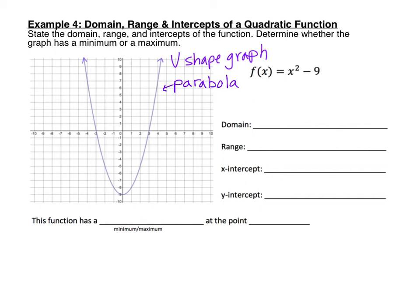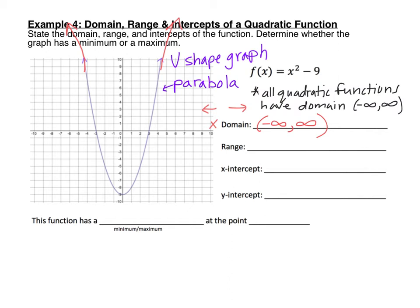We're going to study quadratic functions and parabolas in more detail later in this course. For now, I'll give you the picture of the graph, and you're going to find the domain and range. Remember that the domain is the x values of the function — I'm looking for the lowest x, what's furthest to the left, and the highest x, furthest to the right. Since this graph has arrows on the end, it goes up and to the left forever on one side and up and to the right forever on the other. So the domain will be all real numbers — negative infinity to positive infinity. All quadratic functions have a domain of negative infinity to positive infinity.